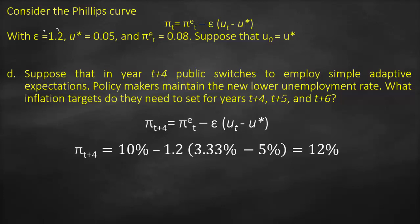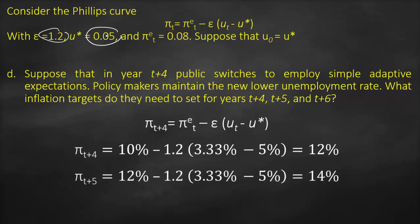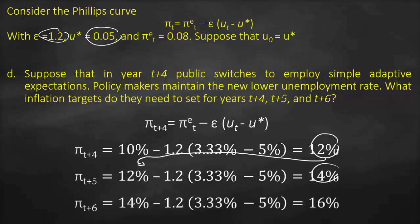Substituting: 10% minus 1.2 multiplied by (3.33% minus 5%) gives us 12%. In the next period T+5, expected inflation updates to 12%, yielding 14%. Then at T+6, using 14% gives 16%. Therefore, to maintain unemployment at 3.33%, inflation keeps increasing from 10% to 12% to 14% to 16%.